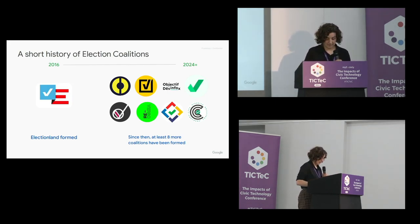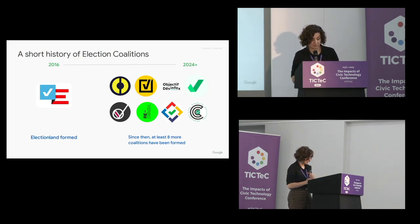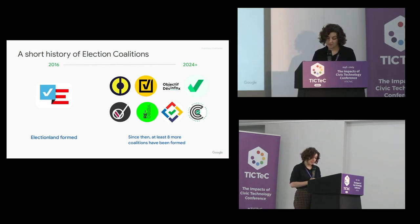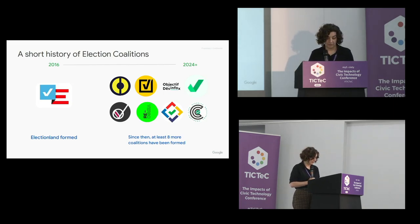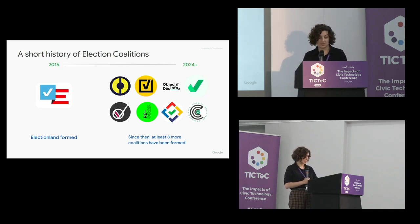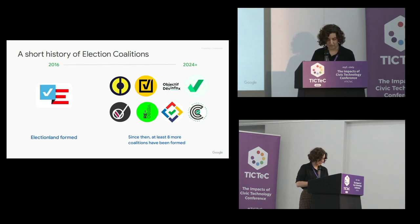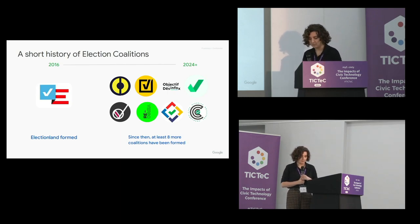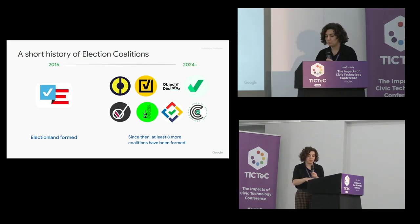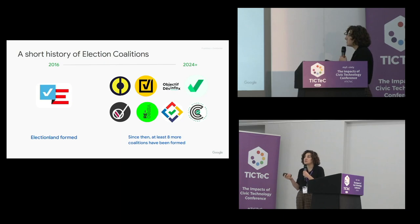That model kicked off in quite a good way and led to many more different examples around the world. In 2017, after ElectionLand, there was CrossCheck in France. Then there was Comprova in Brazil in 2018, and Verificado in Mexico. In 2019, there was Objectif Disinfo in France and Reverso in Argentina. In 2022 in the Philippines, there was Facts First PH, spearheaded by Rappler, which took it to another level. That's essentially the premise — media organizations and fact-checkers, and in some cases civic organizations, coming together to pool resources around election misinformation.